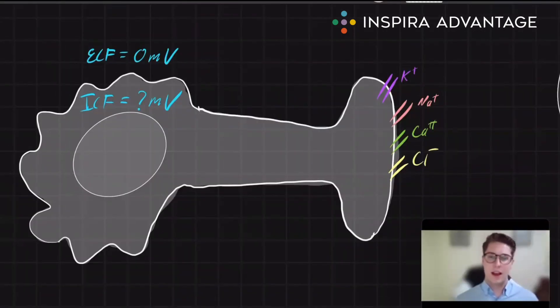To start off, let's talk about one of the highest yield topics on the MCAT: action potentials. To better understand how action potentials work, let's first explore why it works.